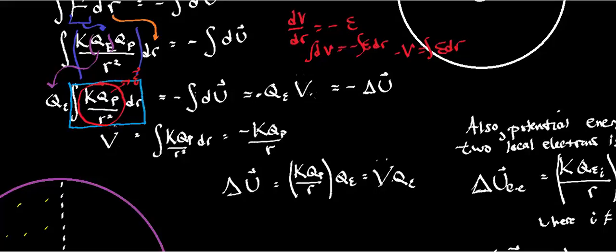And that has to equal the negative change in potential energy. Now, notice here, I have two negative signs. They'll just cancel. And so what I ultimately get here is the following, is that the change in potential energy is equal to the voltage times the charge of the electron.